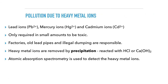Heavy metal ions such as lead, mercury and cadmium are only required in small amounts to be toxic. They get into our rivers via factories, old lead piping systems and illegal dumping. Heavy metal ions can be removed by precipitation. AAS (atomic absorption spectroscopy) is used to detect the presence of heavy metal ions.